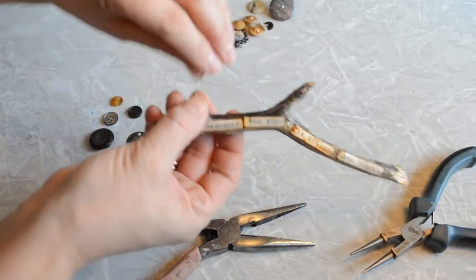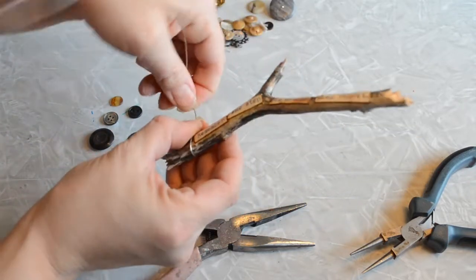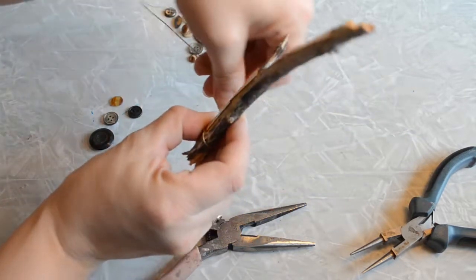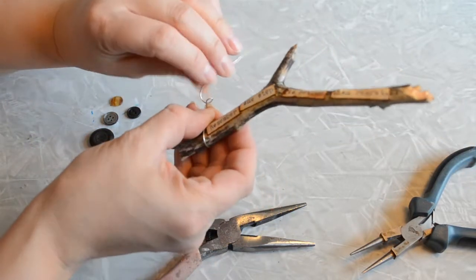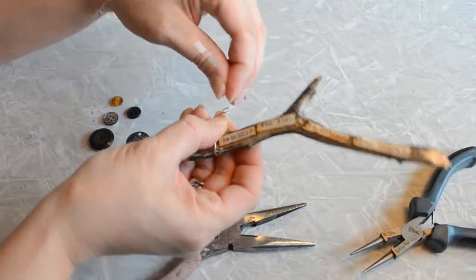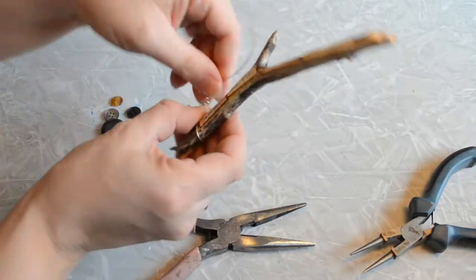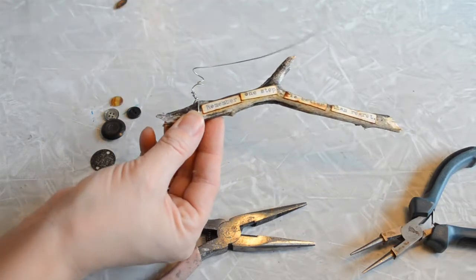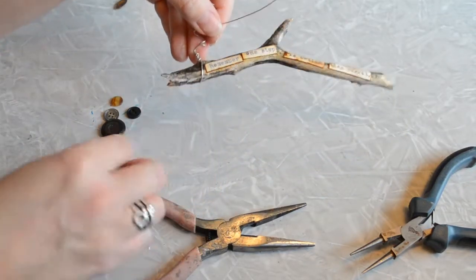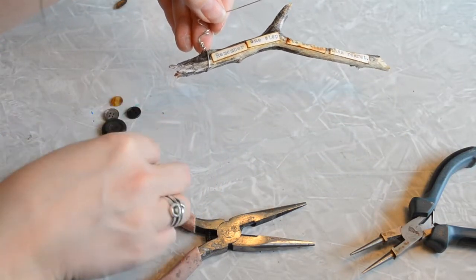I'm just going to put a few little kinks in here just by twisting it around a few times. I've got my few buttons here that I'm going to use, but I'm just going to put a little kink in it here. Now it's just got this cute little curly cue.